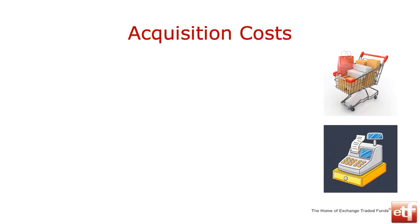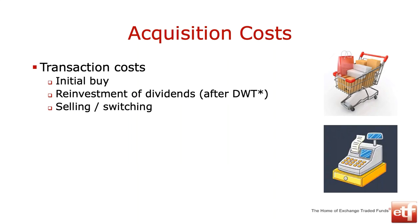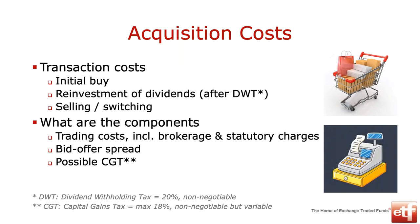Cost type number two: acquisition costs. You've still got to go buy this thing on the stock exchange. The transaction costs include not just the initial buy, but also the reinvestment of dividends over time, and there's dividend withholding tax - DWT. There's also costs involved if you want to sell, switch, or do any form of trading. Components of your acquisition costs: trading costs - brokerage, statutory charges - plus a bid-offer spread and potential capital gains tax. Interestingly, capital gains tax is actually always a lower rate than dividend withholding tax - the maximum CGT is 18%.